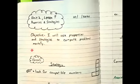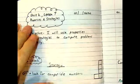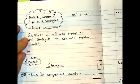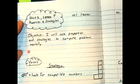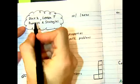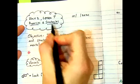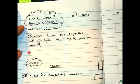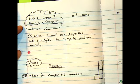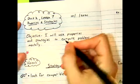Let's go ahead and get all the normal usual parts of our notes together. We've got a title, we've got a date, we have an objective. The title of this lesson is properties and strategies. So essentially we have two tips that we're going to go through today. Our objective: I will use properties and strategies to compute problems mentally.